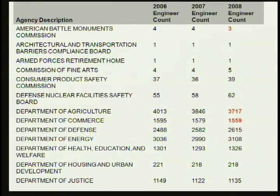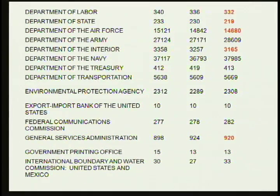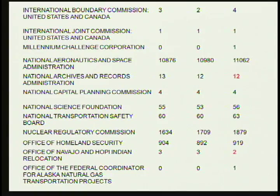Looking at trends over the last three years: red denotes a decrease in the number of engineers. For most agencies, they are growing in their need for engineers. Some, like Department of Agriculture, are going down slightly, as is Department of Commerce. The Air Force is also decreasing its reliance on engineers from 2006 to 2008. Department of Interior is declining as well. But everyone else is either staying stable or increasing the number of engineers and engineering technicians they are looking for.